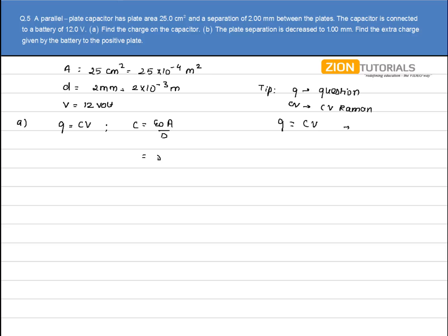Substituting the values: ε₀ = 8.85×10⁻¹² times area 25×10⁻⁴ divided by distance 2×10⁻³. This gives us the capacitance.